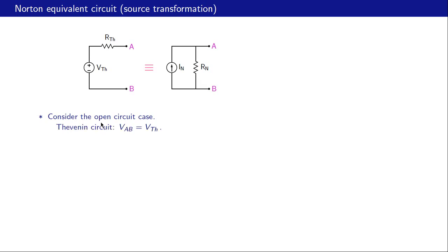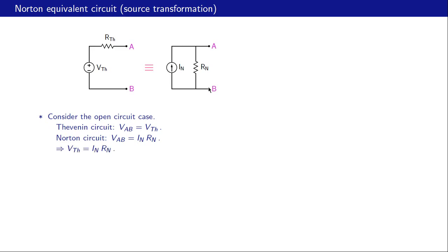Let us consider the open circuit case. For the Thevenin circuit, the open circuit voltage between a and b is simply v-th, since the current and voltage drop across r-th is zero. For the Norton circuit, the open circuit voltage between a and b is i-n times r-n. For the two circuits to be equivalent, these must be equal, giving us the condition: v-th equals i-n times r-n.